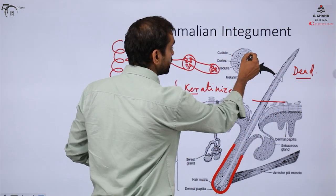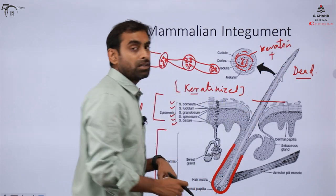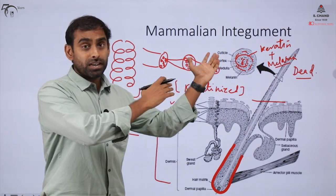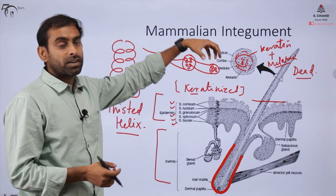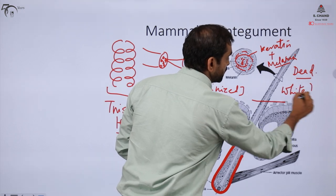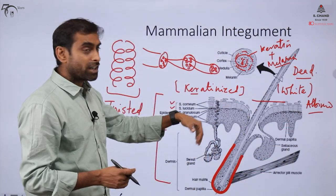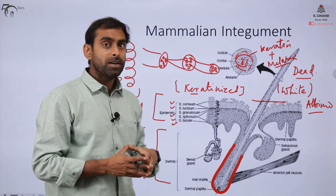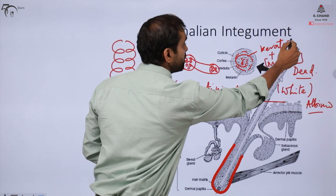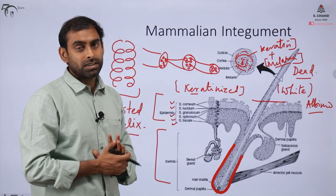Melanin gives color to hairs. When the amount of melanin decreases, or due to a genetic defect there is no melanin, those people or organisms will have white hairs and are often called albino — their skin also has no pigment. When hair gets grayed with age, the reason is also poor formation of melanin. So the presence of melanin and the presence of keratin are two of the most important features that distinguish mammalian skin from other skins.